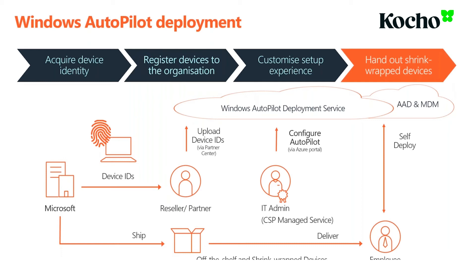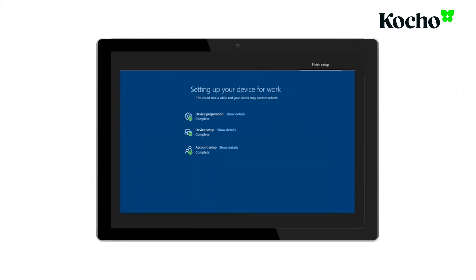It's also worth mentioning Autopilot White Glove, which allows an IT pro to receive the machine, install any corporate apps or customizations that are difficult to deploy through Intune today, and then reseal and ship the device to a user. Ultimately what we want to achieve is the full Intune end-to-end process with minimal IT interaction upfront. The device configures itself across the internet with policies and settings applied via Intune and Azure AD - without a single VPN connection, Group Policy, or Active Directory logon required - and you've successfully deployed a compliant, secure device with all applications needed for productivity.